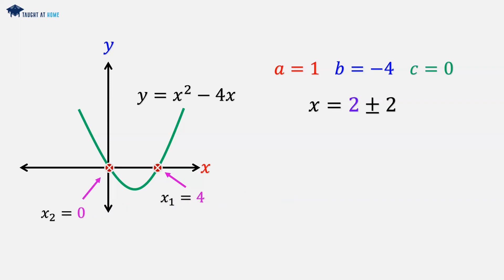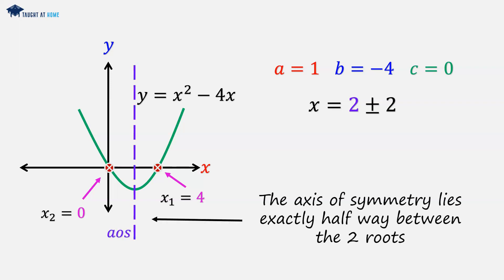The axis of symmetry occurs at the point that lies exactly halfway between the two roots. The axis of symmetry lies on the line x equals 2. Now that x equals 2 relates to the 2 here.